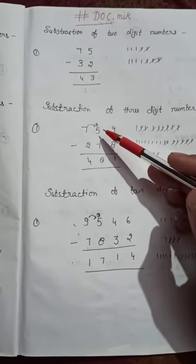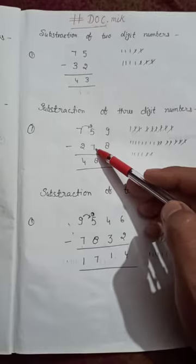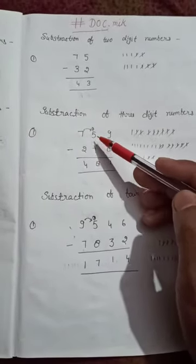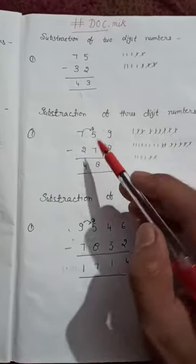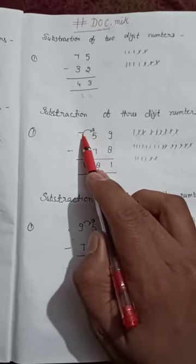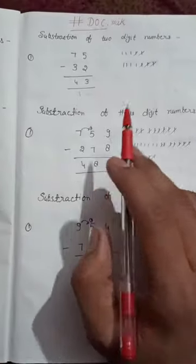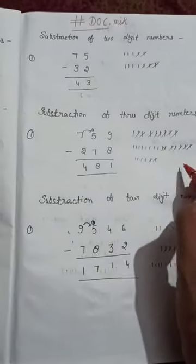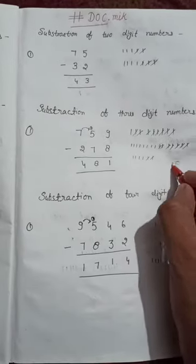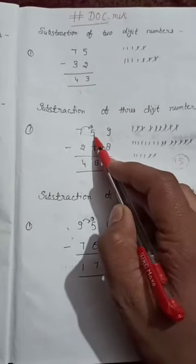Now the second digit is tough, so please carefully listen. We have 5 and 7. We cannot subtract 7 from 5. So what we do? We carry 1 from 7. So now we carry 1 from 7, and 5 becomes 15. Now we subtract 7 from 15.